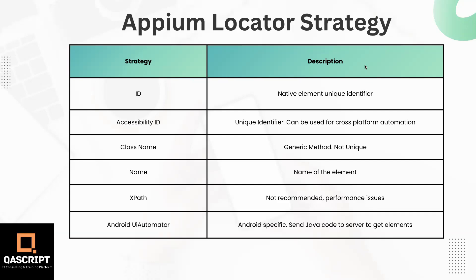Then we have got the Android UI Automator. This is an Android-specific locator and it is also a unique identifier, so you can use this to identify your elements uniquely. What it does is it sends a Java code to the server in order to get an element from different elements. These are some of the generic locator strategies which you will come across, and in very rare scenarios you have to use some other locator strategies if none of them are available.